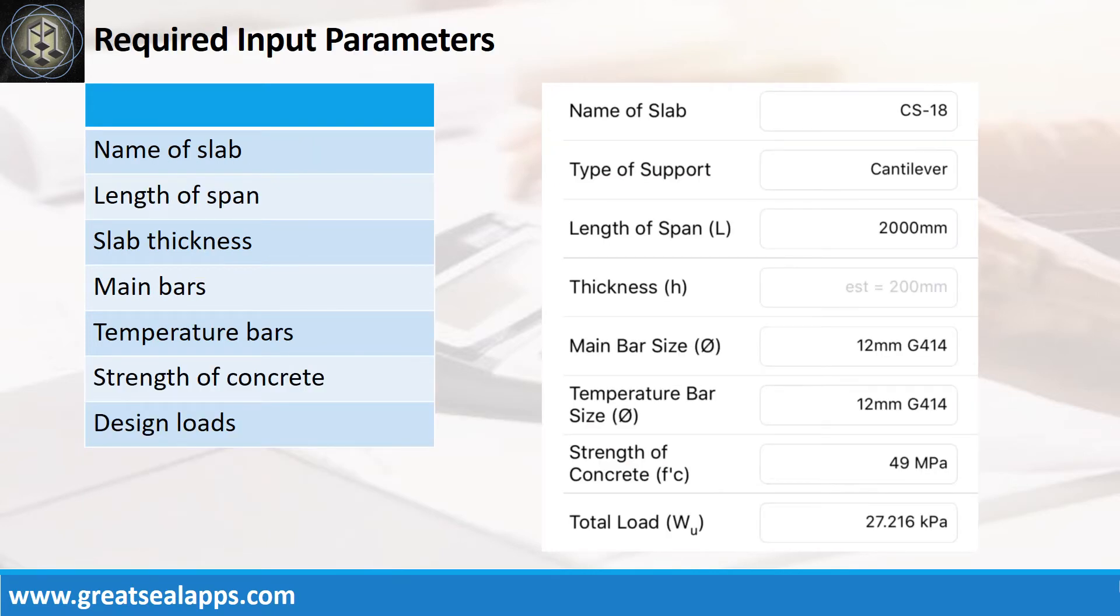Enumerate input parameters required. Name of slab, CS18. Type of support, cantilever. Length of span, 2000 mm. Slab thickness, 200 mm.